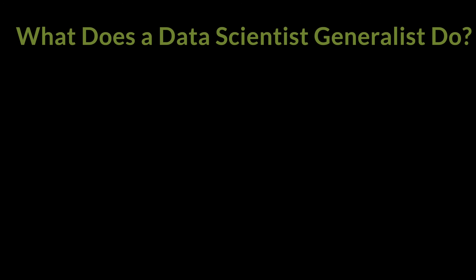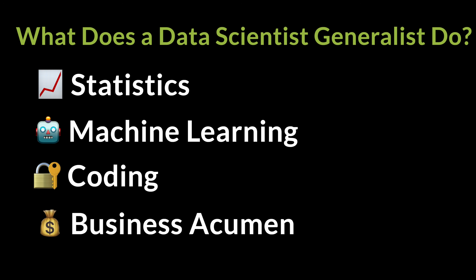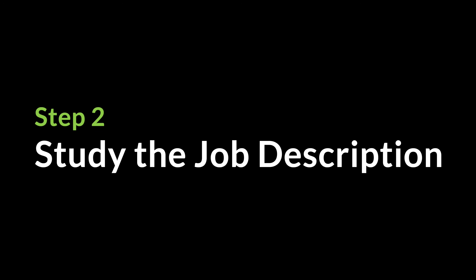Let's say you've decided you want to become a data scientist generalist — think of it like a full-stack engineer who does back-end, front-end, and everything in between. A full-stack data scientist knows statistics, machine learning, and coding, and can take a business problem and apply data science to solve it and add value. Once you've figured out the role, you're not done researching yet. I'd suggest reading job descriptions for data scientist roles at different companies you're interested in.